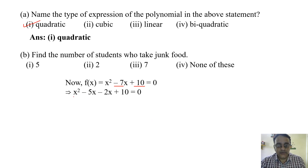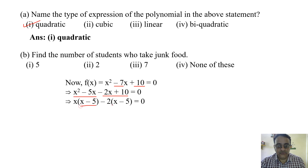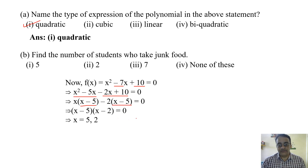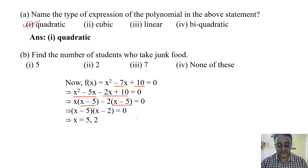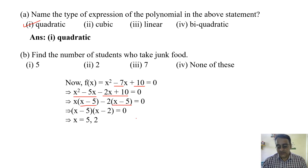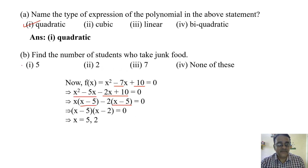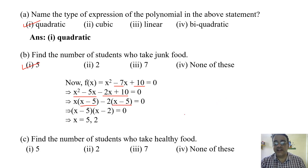Taking x common from the first two terms and 2 common from the last, we get two zeros: 5 and 2. Since alpha is greater than beta, alpha equals 5 and beta equals 2. Alpha is the number of students who take junk food, so the answer is 5, which is the first option.